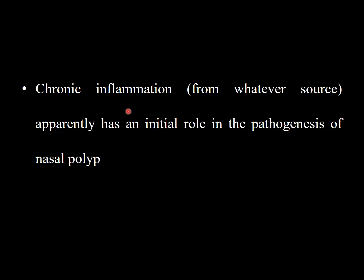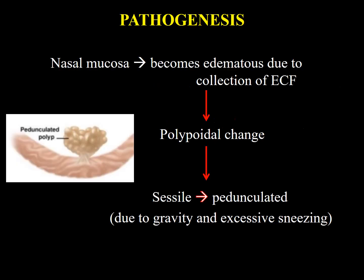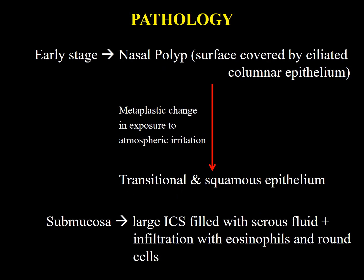Chronic inflammation from whatever reason apparently has an initial role in the pathogenesis of nasal polypi — basically inflammation coupled with allergic condition. The nasal mucosa becomes edematous due to collection of extracellular fluid, leading to polypoidal changes, then first a sessile and then a pedunculated form due to excessive sneezing and gravity effect.